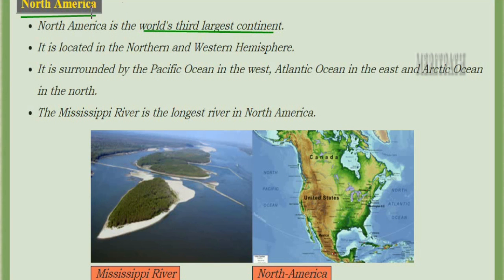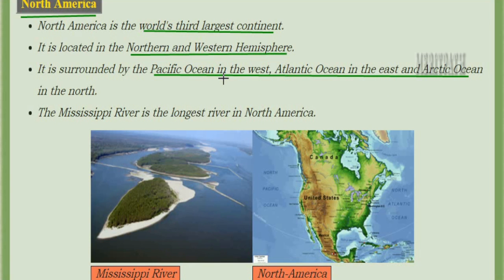The next continent is North America, the world's third largest continent after Africa. It is located in the northern and western hemisphere and is surrounded by water on all sides: the Pacific Ocean in the west, the Atlantic Ocean in the east, and the Arctic Ocean in the north. The Mississippi River is the longest flowing river in North America.